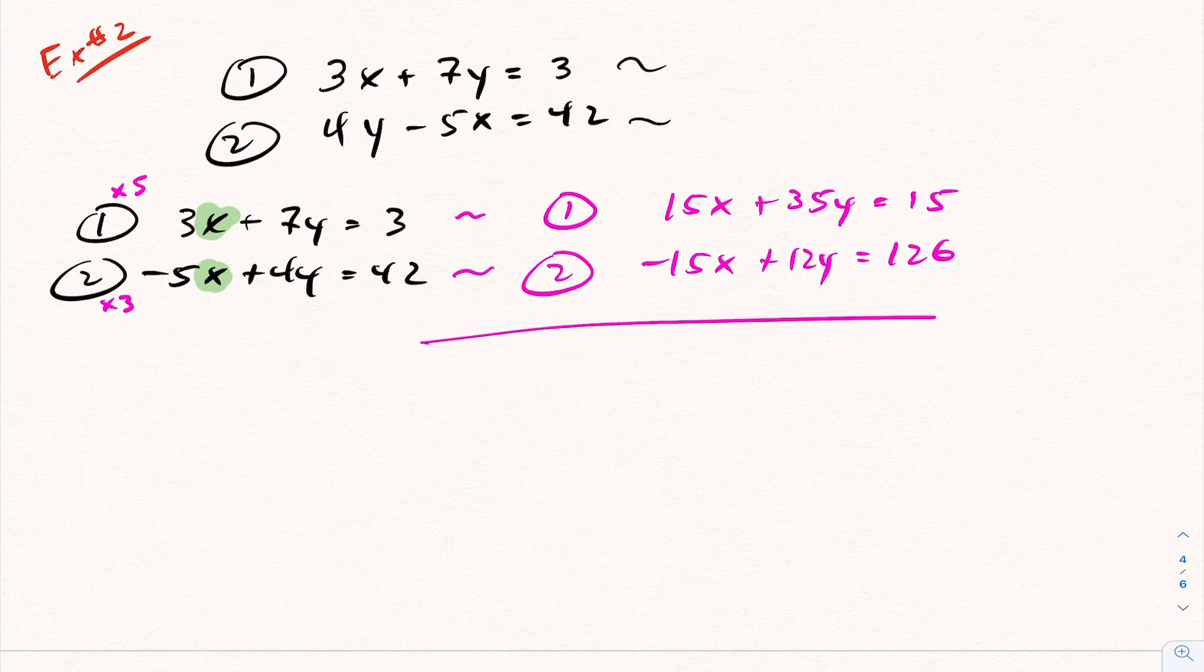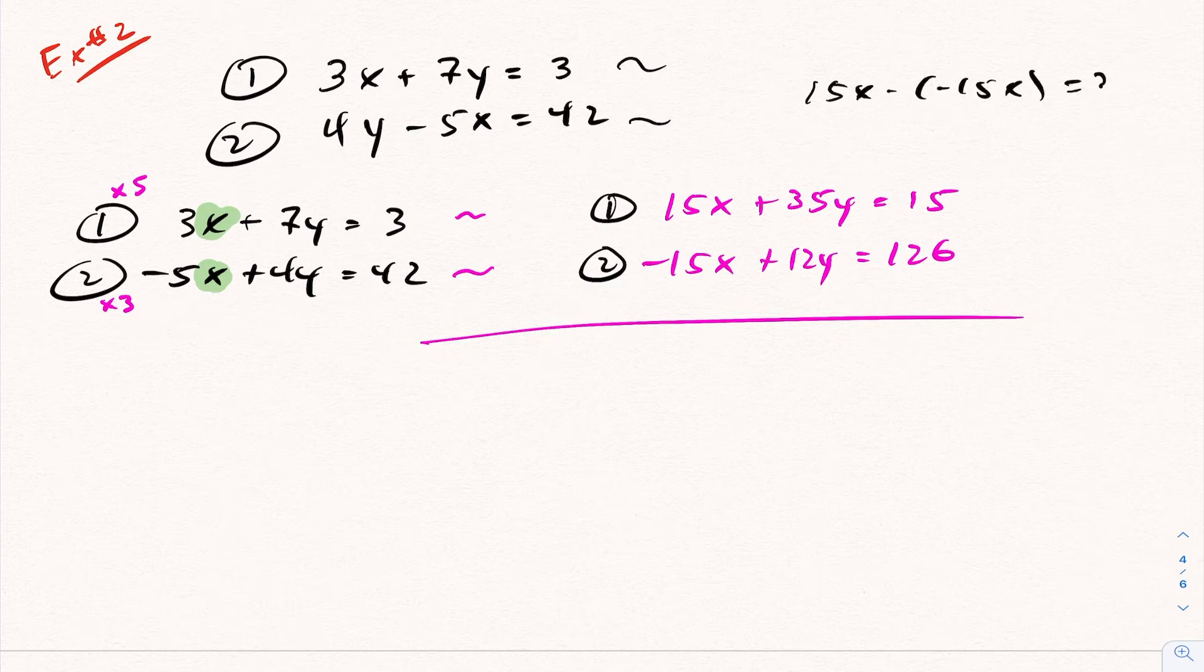And now same idea. You ask yourself, what operation is going to get rid of the x's this time? Is it going to be addition or subtraction? If I would have chosen subtraction in this case, you would have 15x minus negative 15x, which would actually be equal to 30x, so that's no good. The operation here in this case is addition.